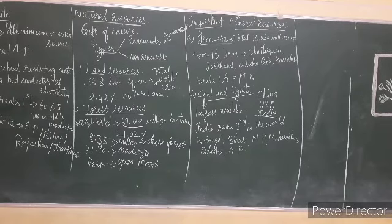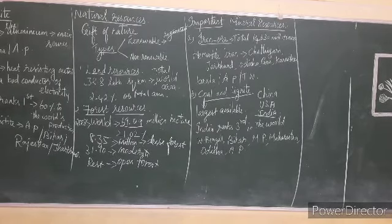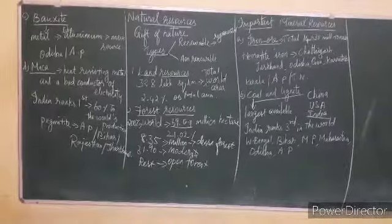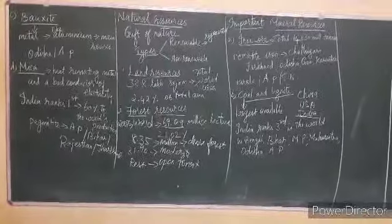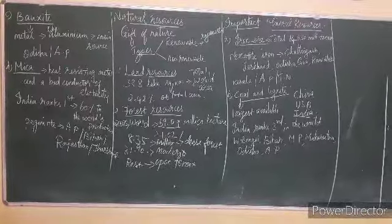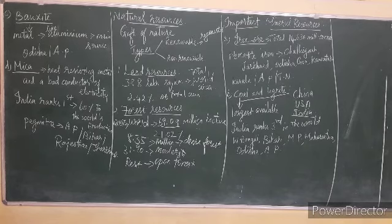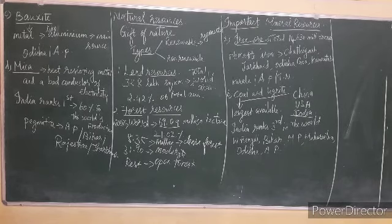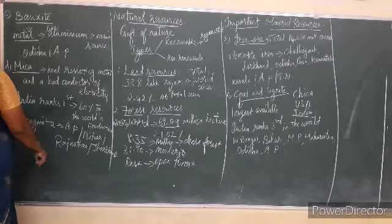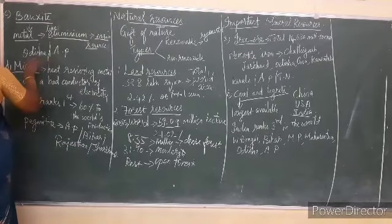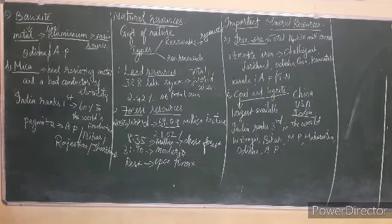The third one is bauxite. Bauxite is the main source of the metal aluminum. It is available in Odisha and Andhra Pradesh.